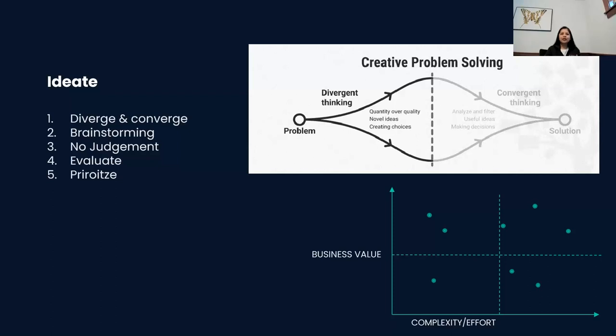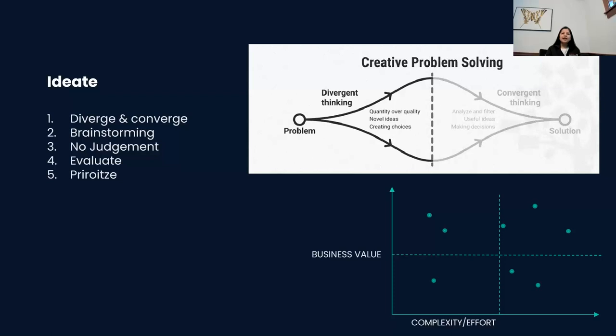That takes me to the next section, which is building. When I say building, it's actually continuing to refine, continuing to hone your features to the need of the customer. And how would you do that? There are various mechanisms again. Your MLP will have multiple features and each feature may be solving one or more than one pain points. So how it is solving that pain point can be illustrated best using storyboarding.